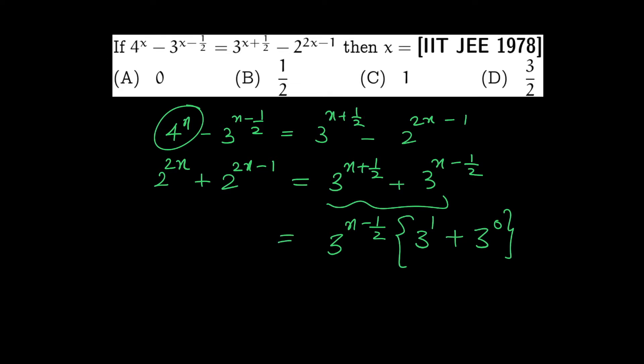What is 2 raise to 2x minus 1? How do you make this 2 raise to 2x minus 1? It becomes 2 raise to 1, then 2 raise to 0, and 2 raise to 2x minus 1 equals 4 raise to x minus 1.